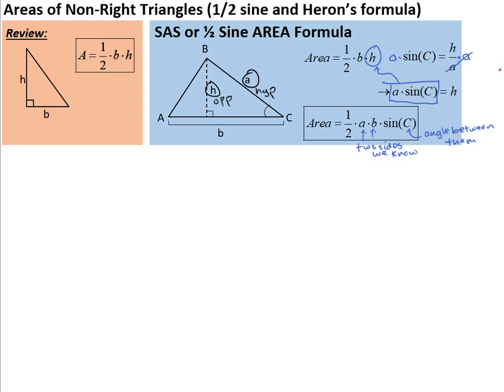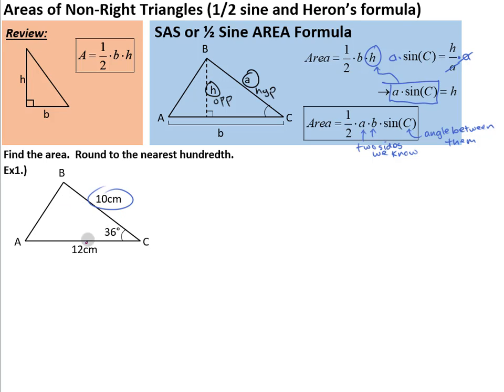So let's try a few examples with this. Example one, find the area and round to the nearest hundredth. Well, looking at our triangle, I know two sides, that's great, and the angle where they meet, the angle between them. So this is the side-angle-side case, which means we can use our nice new formula. So remember that area equals one half times the two sides we know, times the sine of the angle between them, which in this case would be the angle at C.